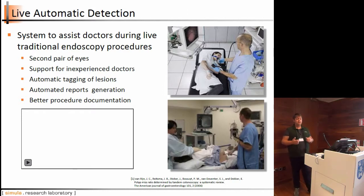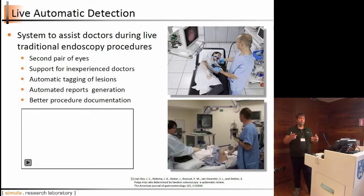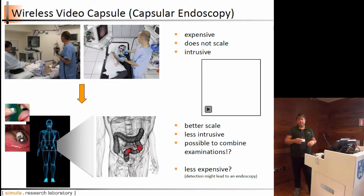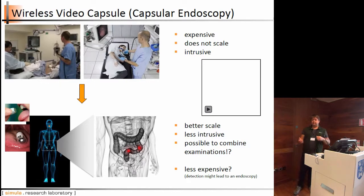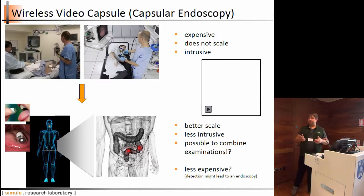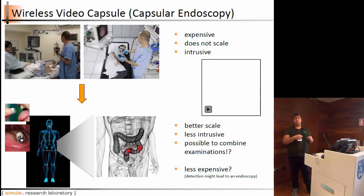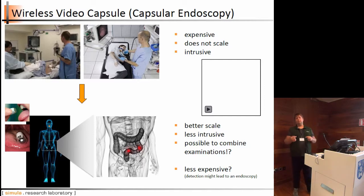Our goal — shared with many research teams — is to develop some kind of automated system. A second goal is to move toward so-called capsule endoscopy, a modern form of investigation: a small capsule goes through your body, films it, and you can get images or video from your gastrointestinal tract.